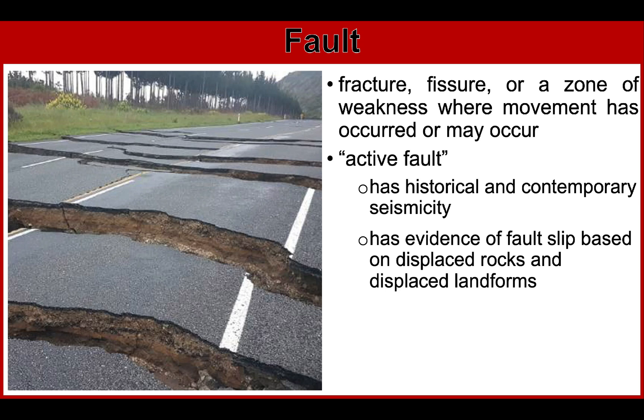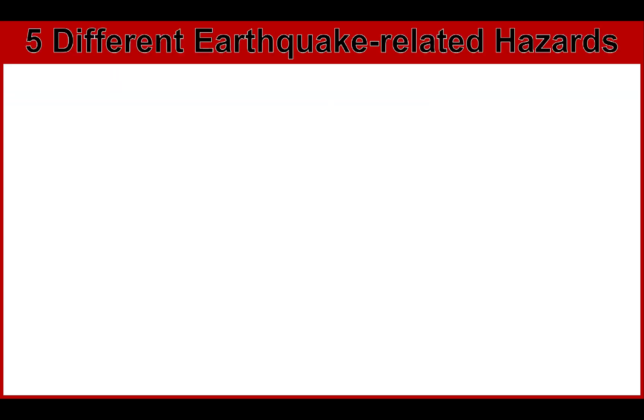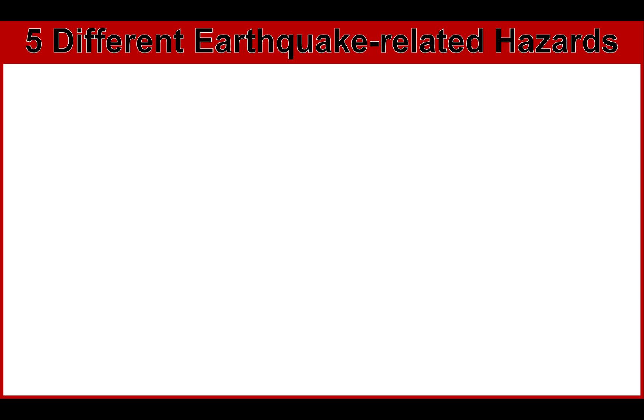An active fault is defined as a fault which has moved within the last 10,000 years. Now let's start with the five different earthquake hazards. Hazards are events or phenomena that may cause loss of life, injury or other health impacts, property damage, loss of livelihood and services, social and economic disruption, or environmental damage.